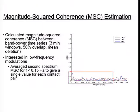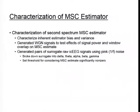Before applying this to real brain data, we wanted to characterize the coherence estimator we were using in order to determine its inherent estimator bias and variance.